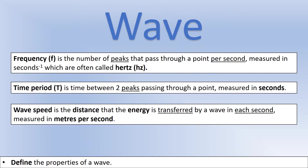There are a few other properties that are more tricky to show on a diagram. The first is frequency, which is the number of peaks that pass through a point each second — or it could be the number of troughs passing each second, it should be the same value. It's named after the scientist Hertz, but its base unit is seconds to the minus one, or one over seconds — that's what a Hertz is.